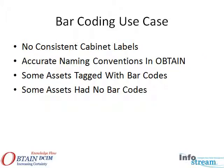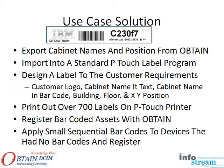In a recent use case, there was no consistent labeling on cabinets, but the DCIM database contained accurate names. Roughly 80% of the devices on the floor had asset tags with barcodes; the remaining 20% had none. In this case, the customer required a sturdy cabinet label produced by their existing P-Touch printer.